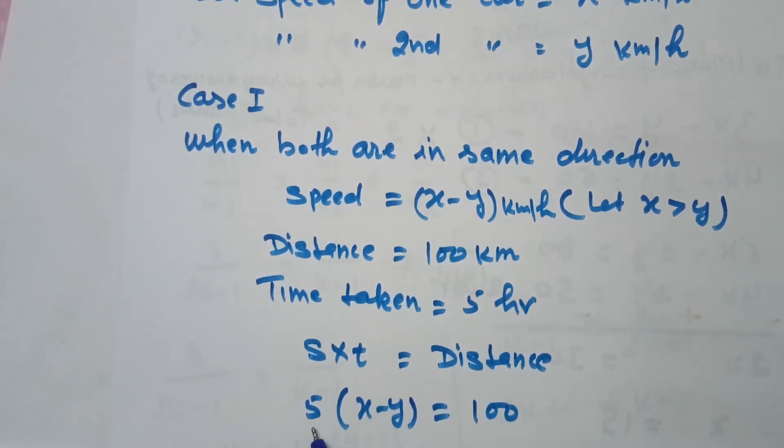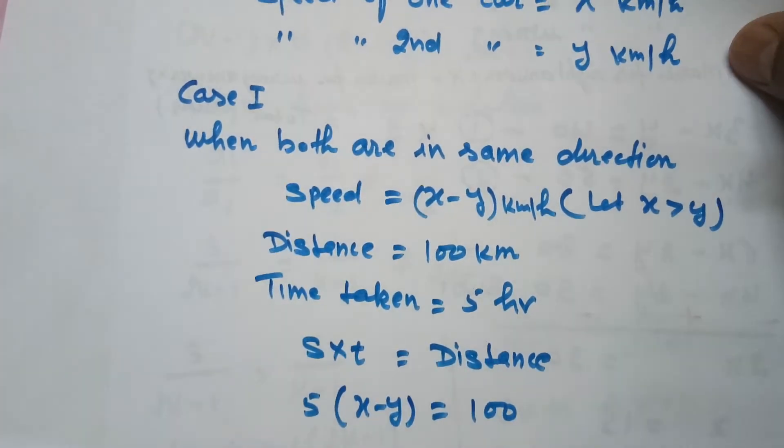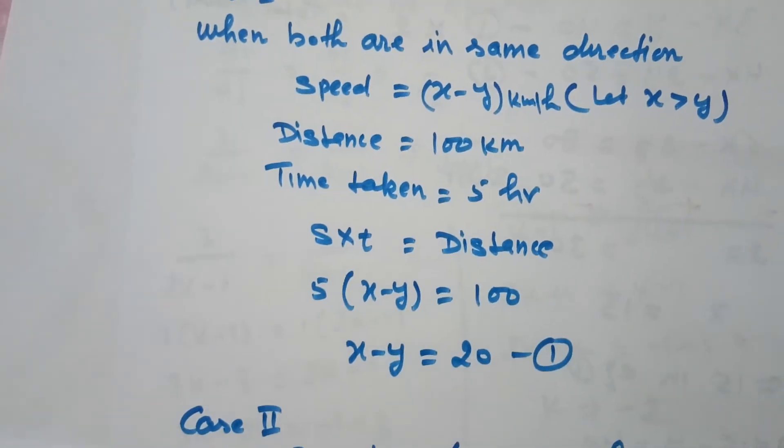Speed is (x-y), time is 5 hours, total distance is 100. The equation we get is: x minus y equals 20.